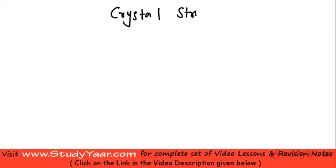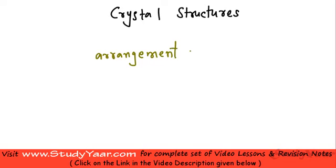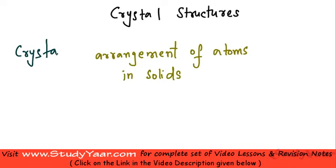In this lesson we are going to learn about crystal structures. The science that deals with crystal structures, or the arrangement of atoms in a solid, is known as crystallography. It is the science that deals with arrangement of atoms in solids. We are going to learn about the different types of crystals and how we analyze them.